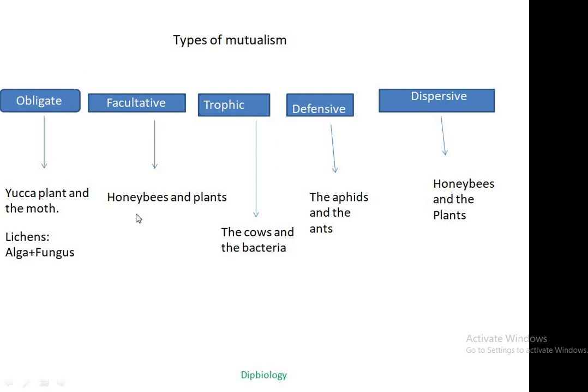These different types of mutualistic interactions — obligatory, facultative, trophic, defensive, and dispersive — are commonly seen in the environment. This is all about mutualism and their types and their common examples found in nature. Thank you for watching.